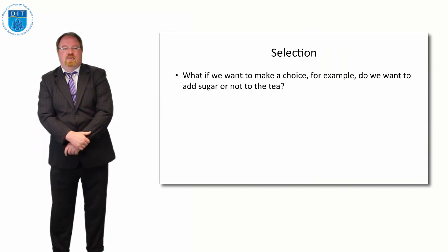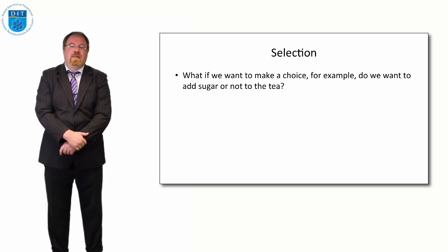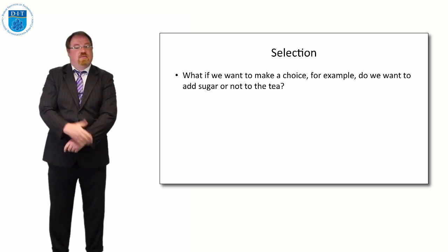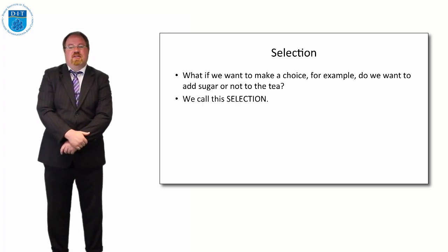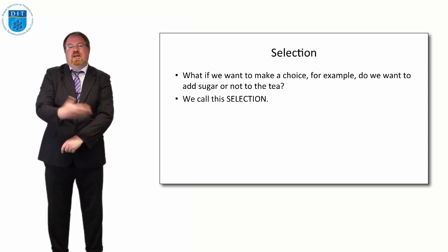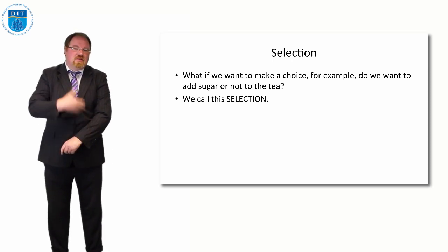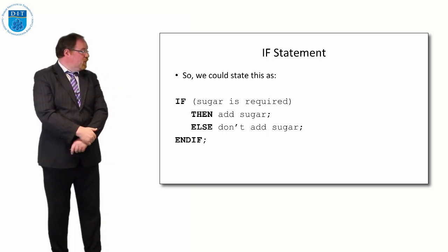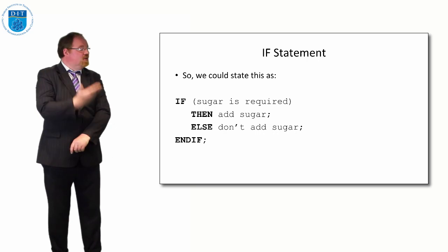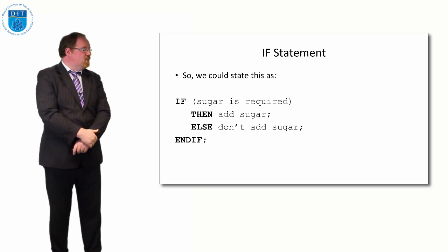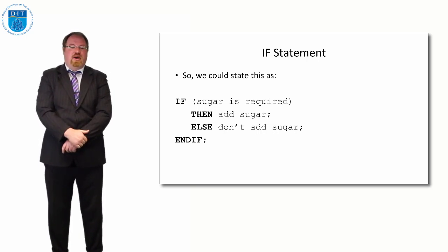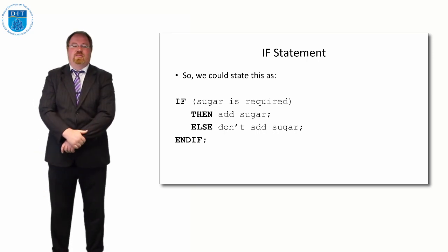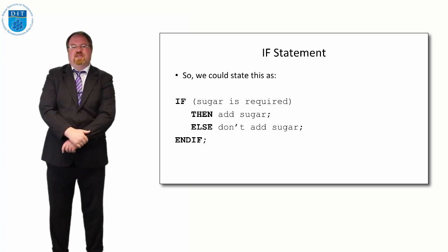If we remember from a previous episode we were looking at making a cup of tea. Let's say we wanted to ask: do we want to add sugar to that cup of tea? We'd call that selection as well — we give the user the option whether they want sugar or not. We could state it as follows: if sugar is required — sugar is required is a condition, it's either true or false — if it's required then we add sugar, otherwise or else we don't add sugar.